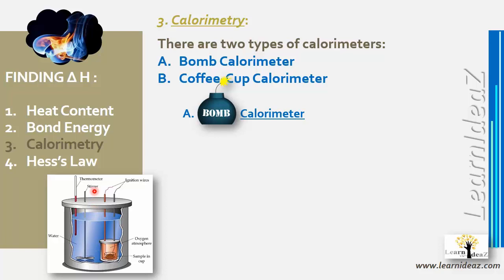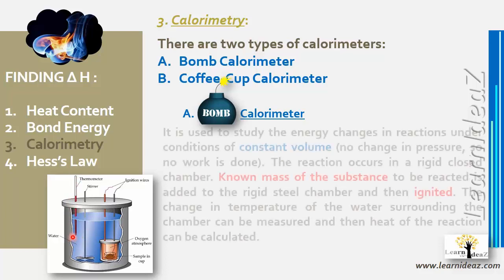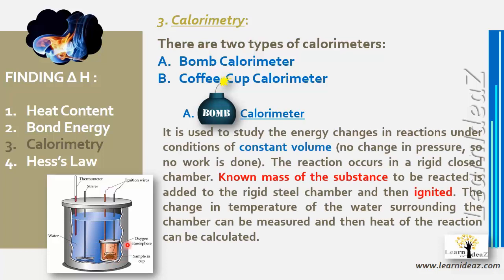Temperature is recorded using a thermometer. The chamber cannot expand, so there is no change in pressure and no work is done — the volume is constant. Once we find delta t, we can determine the heat of the reaction.